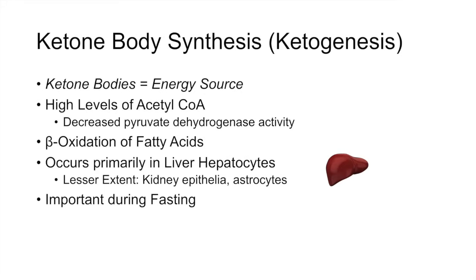Ketone bodies as an energy source are actually incredibly important during fasting, and probably one of the more important locations for ketone body utilization during fasting is the brain. The brain utilizes ketone bodies during fasting to reduce its reliance on glucose. The brain is almost entirely dependent on glucose because the blood-brain barrier is actually impenetrable to fatty acids — fatty acids cannot cross the blood-brain barrier and enter the brain. So during fasting, that's why the brain utilizes ketone bodies to reduce its reliance on glucose.